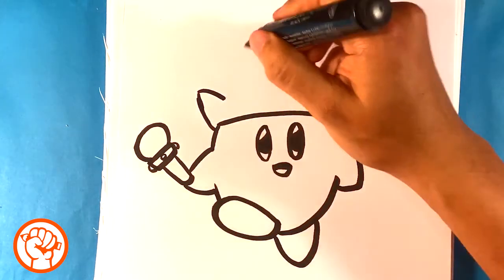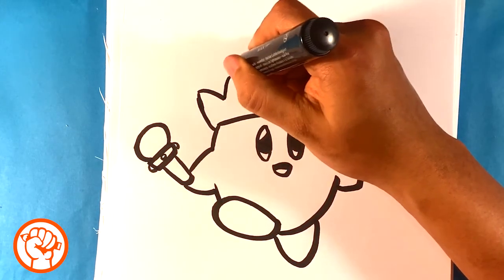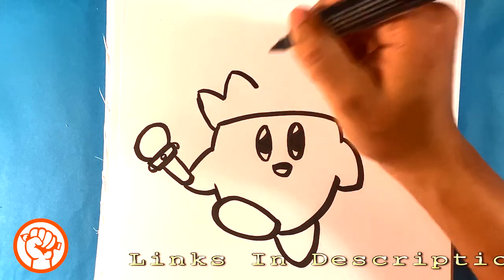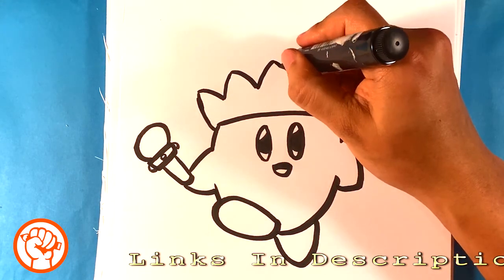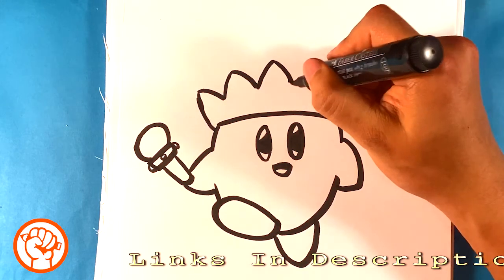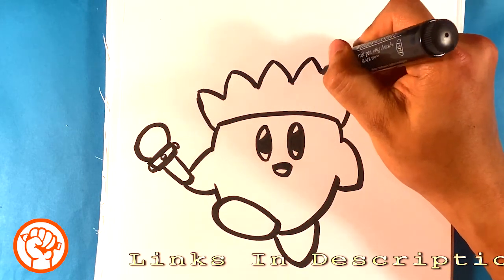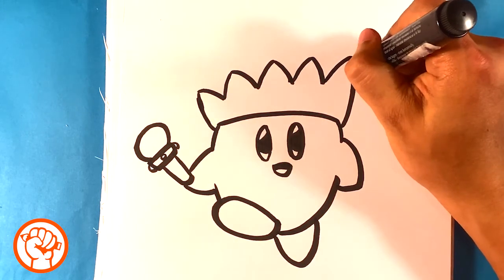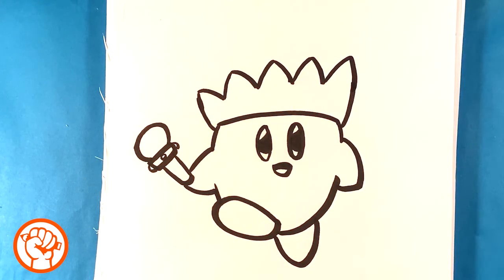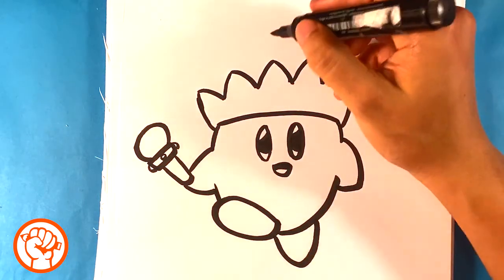Down here, spike here, down here, spike here, down here, spike here. That's going to be the top of his Jester's hat. Almost looks like a crown.